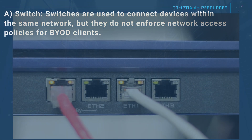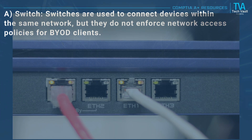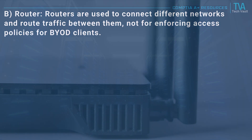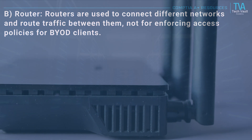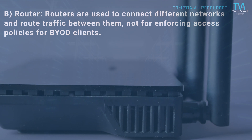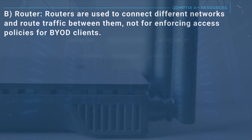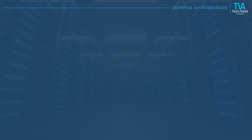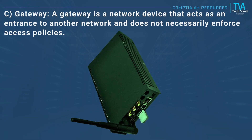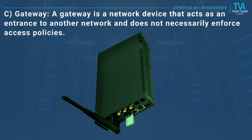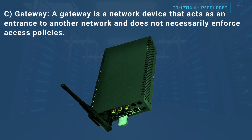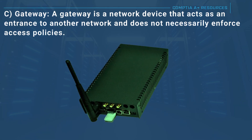A, switch: switches are used to connect devices within the same network but do not enforce network access policies for BYOD clients. B, router: routers are used to connect different networks and route traffic between them, not for enforcing access policies for BYOD clients. C, gateway: a gateway is a network device that acts as an entrance to another network and does not necessarily enforce access policies.